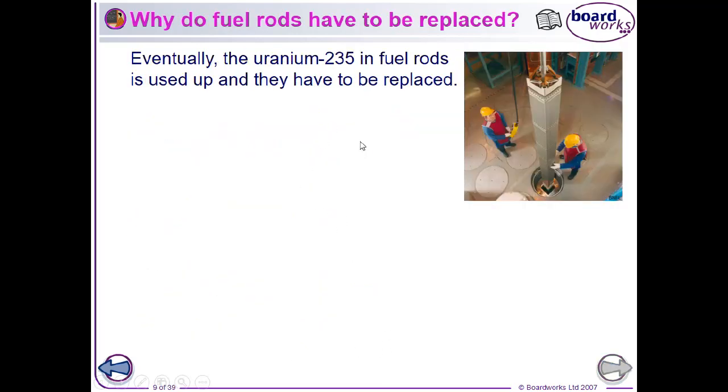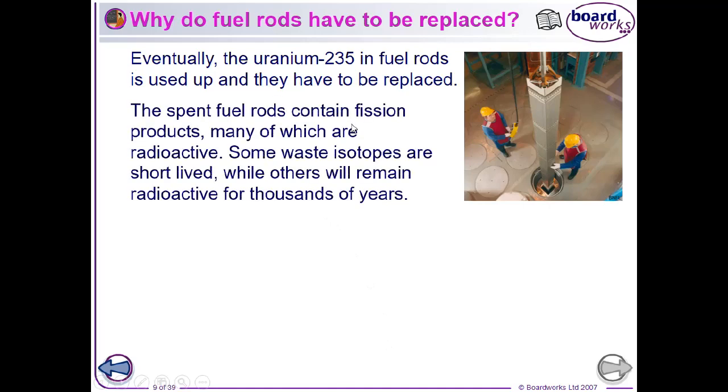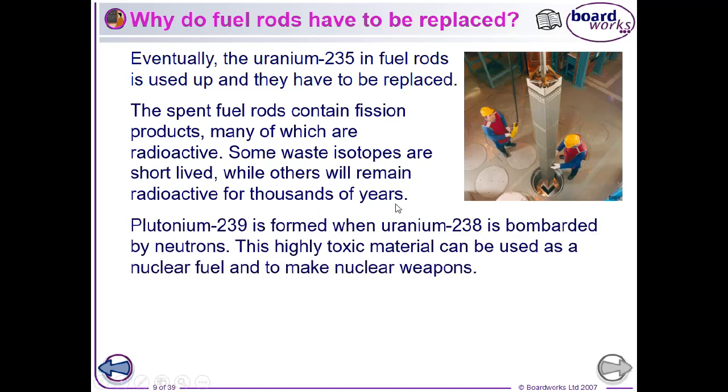So, eventually, uranium-235 in the fuel rods gets all used up and the fuel rods need replacing. The spent fuel contains the waste products from the fission or the daughter nuclei, which are radioactive. And some of these isotopes remain radioactive for thousands of years to come.